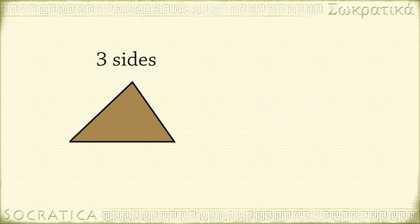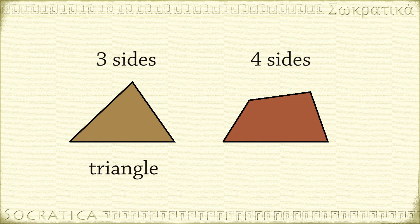A three-sided polygon is called a triangle. A four-sided polygon is called a quadrilateral.